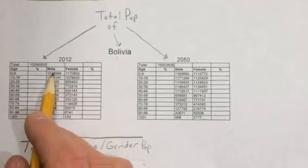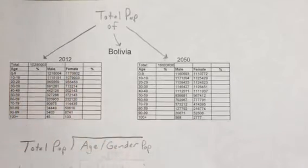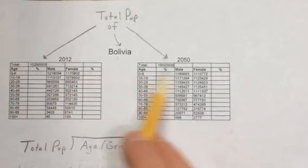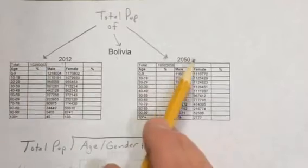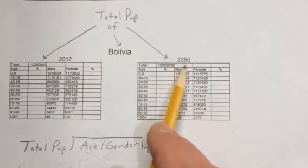These are their male and female populations based on age group. Over here, we have another table for a projection in 2050.